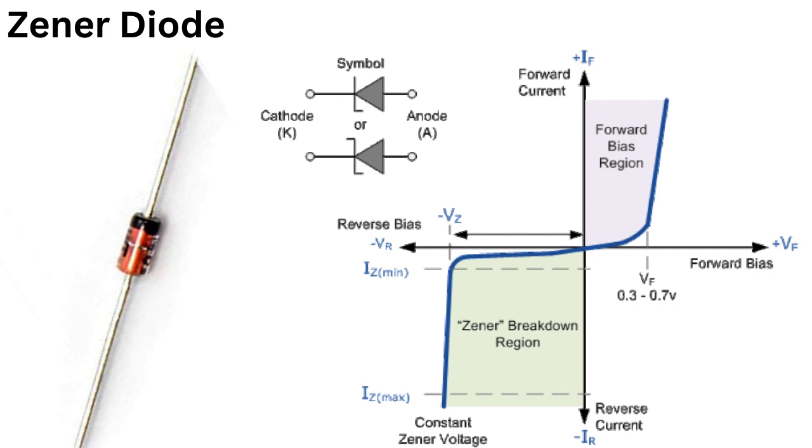In summary, the Zener voltage of a Zener diode changes with temperature. As temperature increases, the Zener voltage increases, and as temperature decreases, the Zener voltage decreases. The rate of change is given by the Zener voltage temperature coefficient, which is specified in the diode's datasheet.